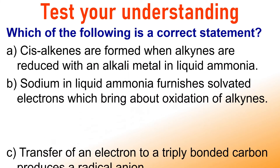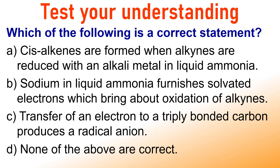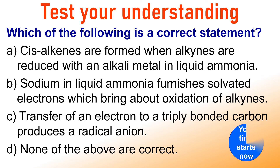Now, test your understanding. Which of the following is a correct statement? Option A: Cis-alkenes are formed when alkynes are reduced with an alkali metal in liquid ammonia. Option B: Sodium in liquid ammonia furnishes solvated electrons which bring about oxidation of alkynes. Option C: Transfer of an electron to a triply bonded carbon produces a radical anion. Option D: None of the above are correct. The correct option is C.